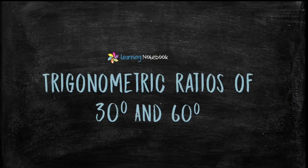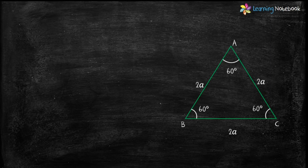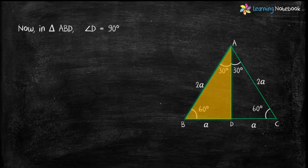Now let's learn trigonometric ratios of 30° and 60°. Consider an equilateral triangle ABC with each side of length 2a. Since it is equilateral, each angle is 60°. Draw AD perpendicular to BC. Since it is equilateral, AD bisects BC and angle A. Therefore BD equals DC equals a, and angle BAD equals angle DAC equals 30°.